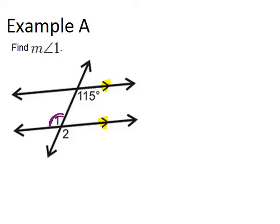Angle 1 is an alternate interior angle with the 115 degree angle. That means because the lines are parallel, angle 1 also has to be 115 degrees. So our answer is the measure of angle 1 equals 115 degrees.